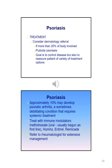Psoriasis can be managed in the PCP's office; however, a dermatology referral might be considered if more than 20% of the body is involved or if they have pustular psoriasis. The overall goal is to control the disease and reassure the patient that there are a variety of treatment options. Approximately 10% of patients with psoriasis may develop psoriatic arthritis, which can sometimes be debilitating. Treatment with immune modulators such as methotrexate, Humira, Enbrel, and Remicade may be prescribed, and a referral to a rheumatologist may be needed.